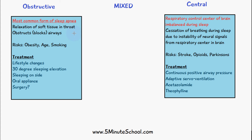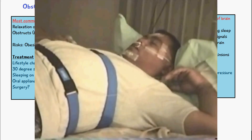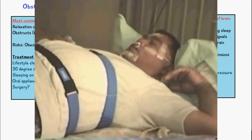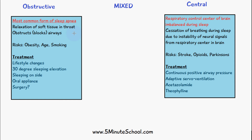The key difference between obstructive and central sleep apnea is the cause. Obstructive sleep apnea is due to blockage from the soft tissues of the airways, whereas central sleep apnea has a more neural cause. With obstructive sleep apnea you can see the patient struggling to breathe because of the blockage — they're still trying to breathe. With central sleep apnea there is no straining of the chest or muscles; the patient isn't trying to take a breath during the episode.